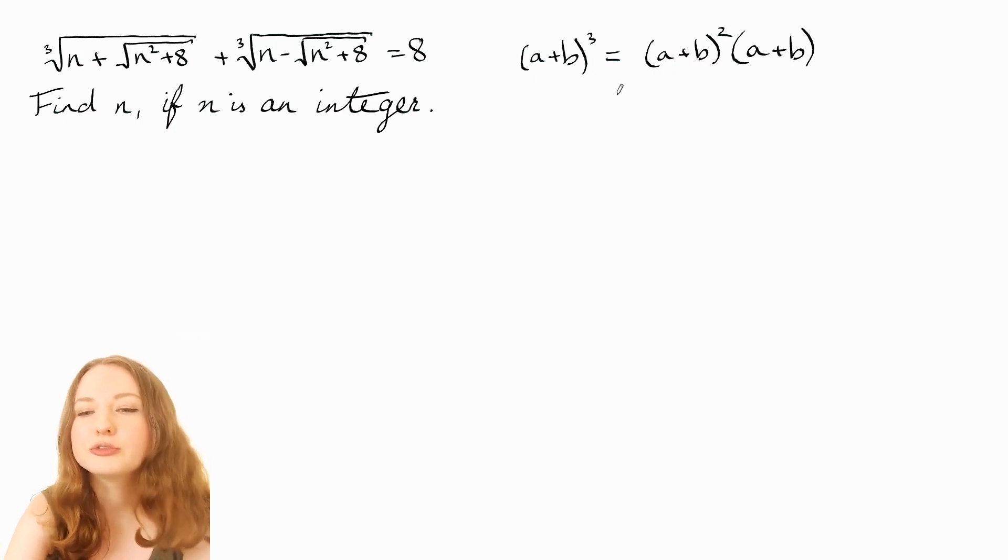So if you do that and simplify everything, you'll eventually get to a³ + 3a²b + 3ab² + b³.